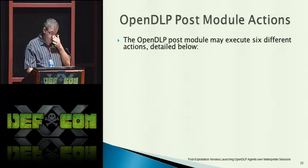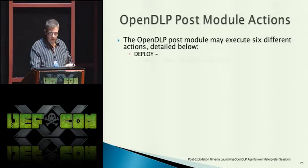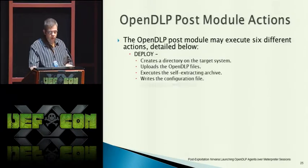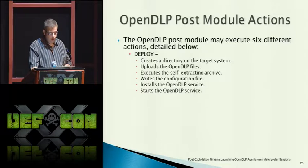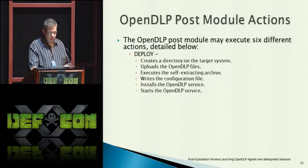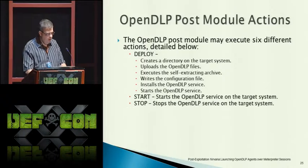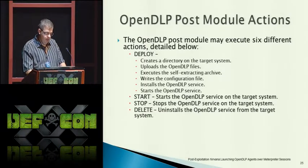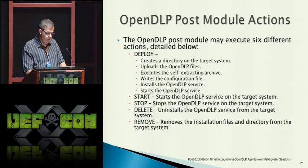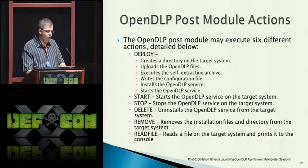This post module has six different actions: Deploy — creates a directory on the target, uploads OpenDLP files, executes the archive, writes a configuration file, installs and starts the service. I can independently start and stop the service, delete and uninstall the service, remove all installation files, and read a file off the target system.